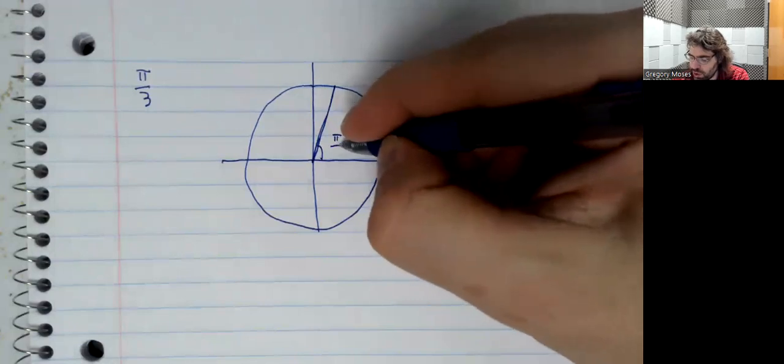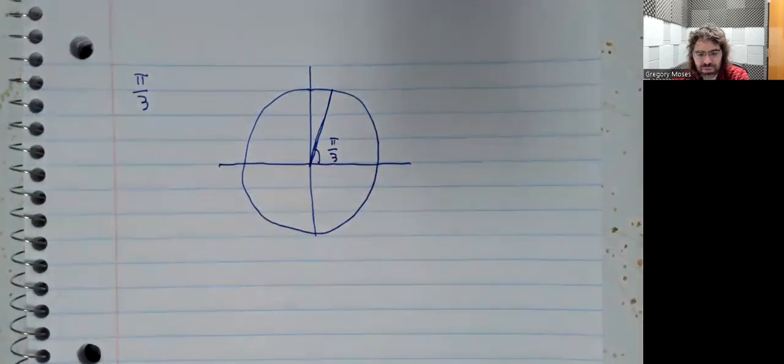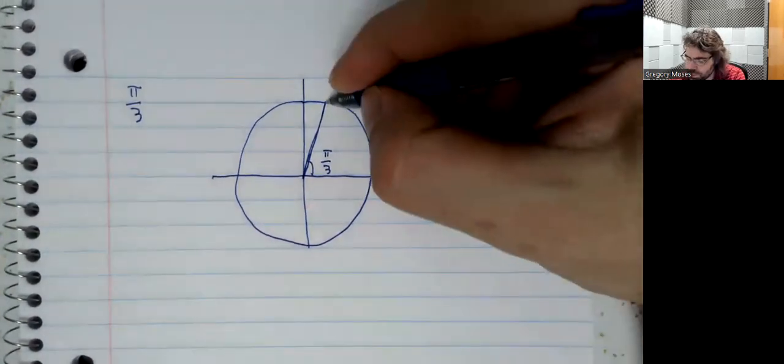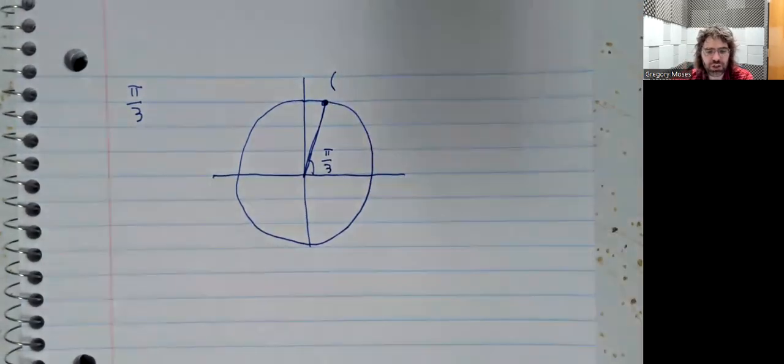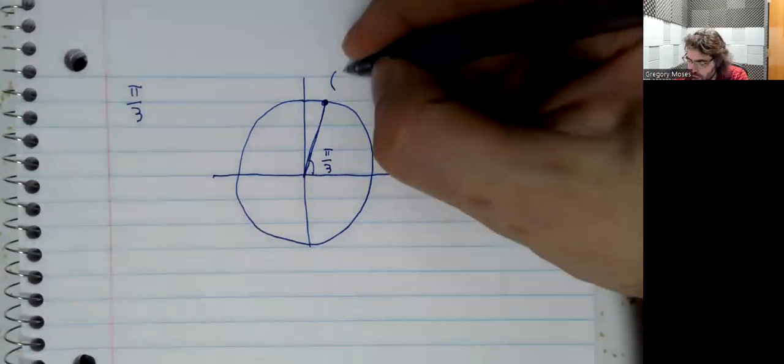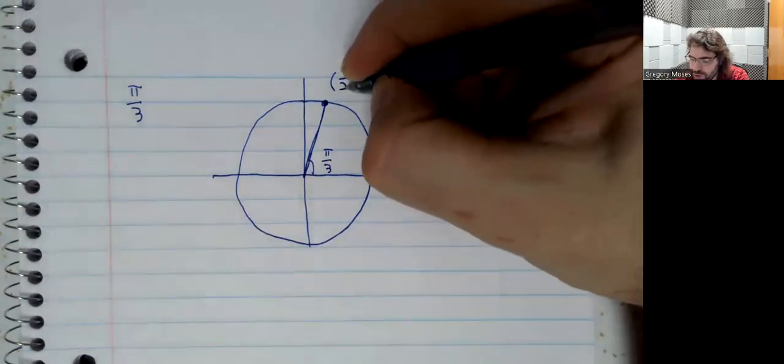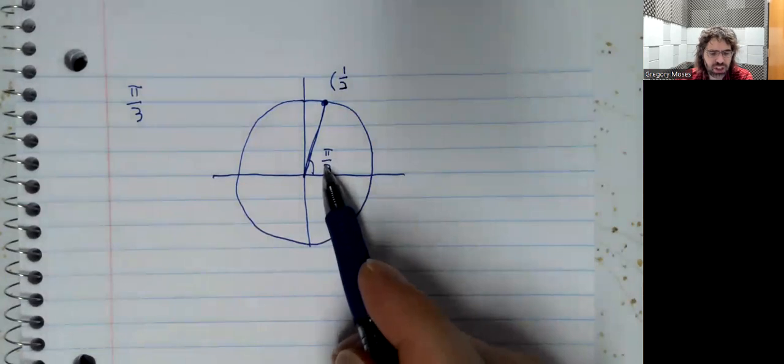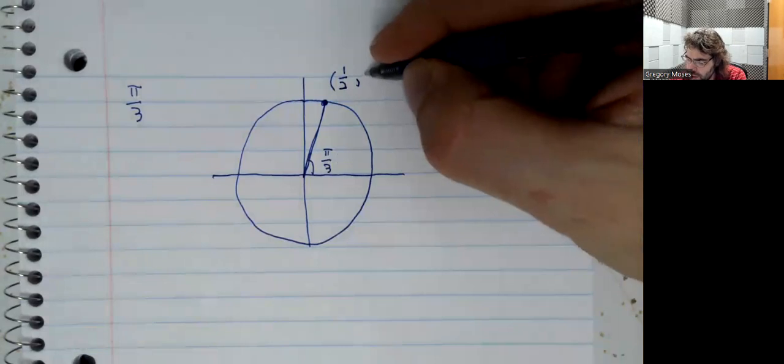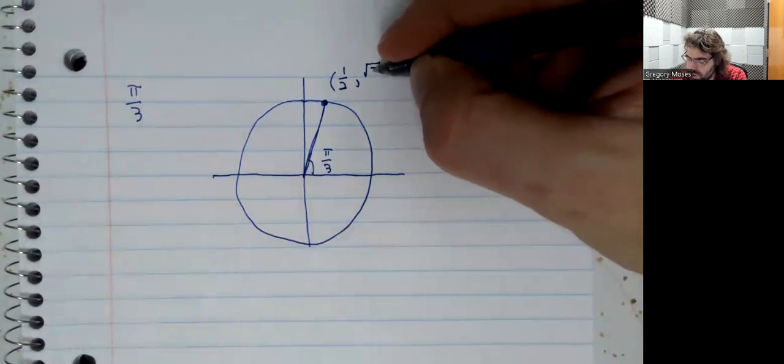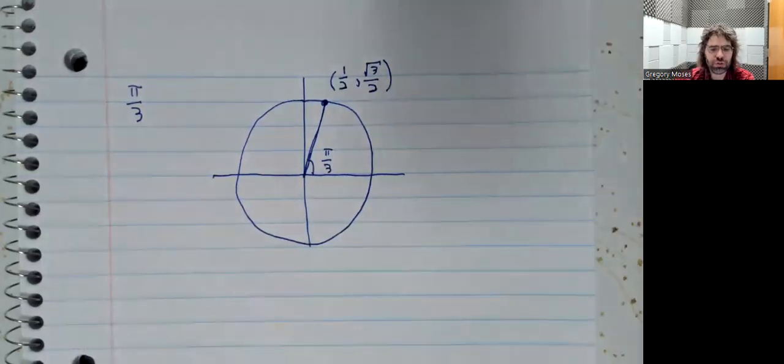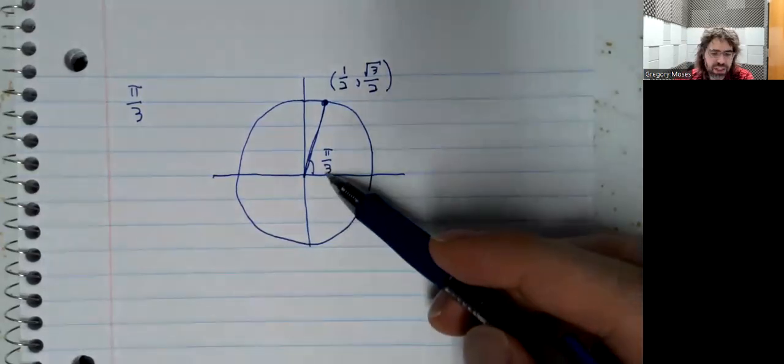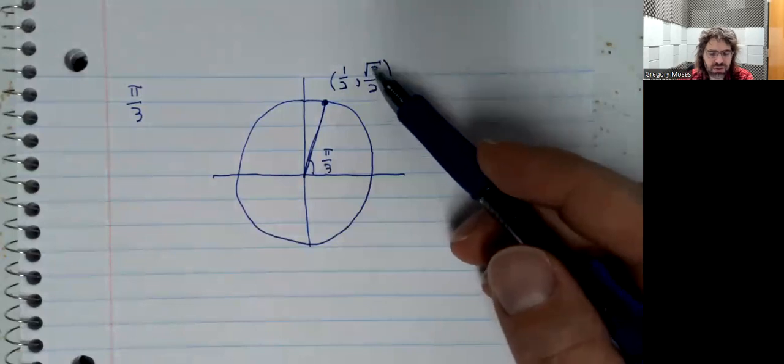Pi over 3 is here. And this point on the unit circle is 1 half, because the cosine of this is 1 half, comma, the square root of 3 over 2, because the sine of this is this fraction.